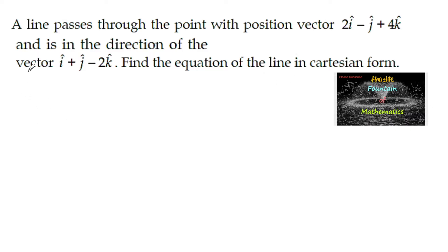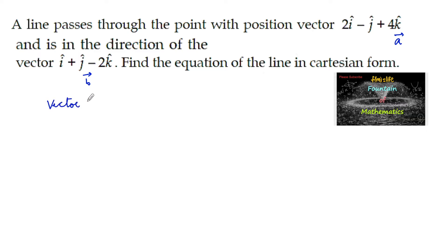Given a line which is passing through the point with position vector a-vector, and in the direction of the vector that is parallel to the vector b-vector, the vector equation is given by: